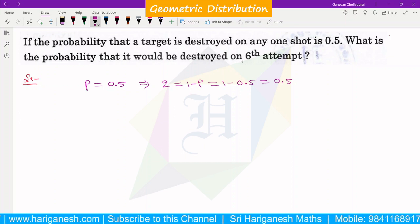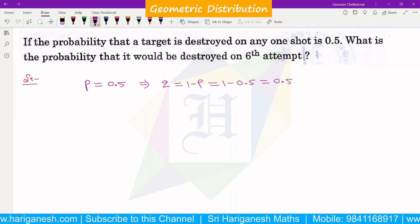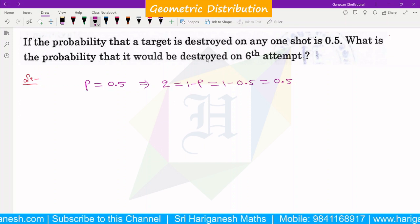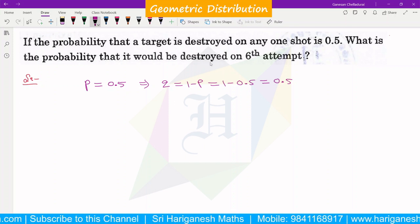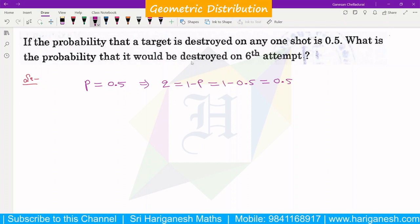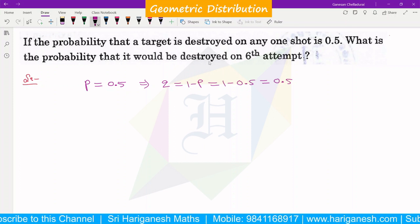In this question, the sixth attempt is when we hit the target. The probability at the 6th attempt to destroy - the first to fifth attempts all fail, so success comes on the sixth trial.